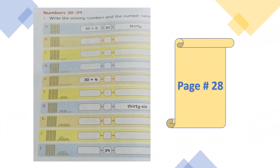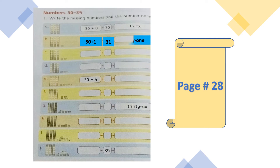Now we are moving to page 28. Here we have to fill in the numbers and number names from 30 to 39. First look at column A: we have 3 stacks of 10 and 0 ones, meaning 30, and in number name it is called T-H-I-R-T-Y, 30. In column B we have 3 stacks of 10 and 1 one, so 30 plus 1 makes 31.